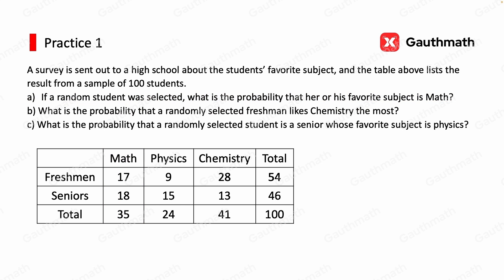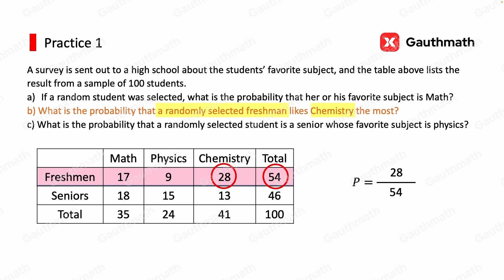Let's now move to Part B. What is the probability a randomly selected freshman likes chemistry the most? This time we're looking at freshmen only, so the total possibility is the number of freshmen, which is 54 — that's the denominator. There are 28 freshmen whose favorite subject is chemistry, so that's the numerator. Our probability becomes 28 over 54, which simplifies to 14 over 27.